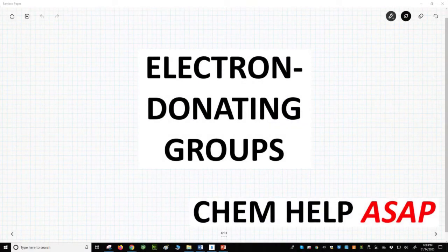Welcome to Chem Help ASAP. Let's focus on one type of R-group that we commonly encounter on aromatic rings – the electron donating group.